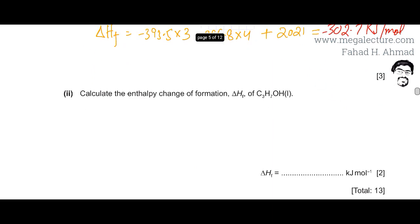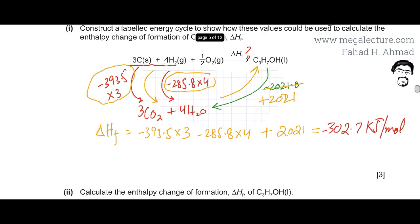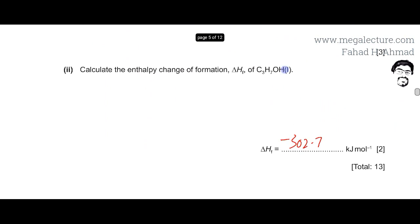The next part of the question asks us to calculate the enthalpy change of formation of propanol (C₃H₇OH), which we have just determined: it is −302.7 kJ/mol. The first sub-part required constructing the Hess cycle, which we did, and the second sub-part required calculating the enthalpy change of formation, which is now complete.